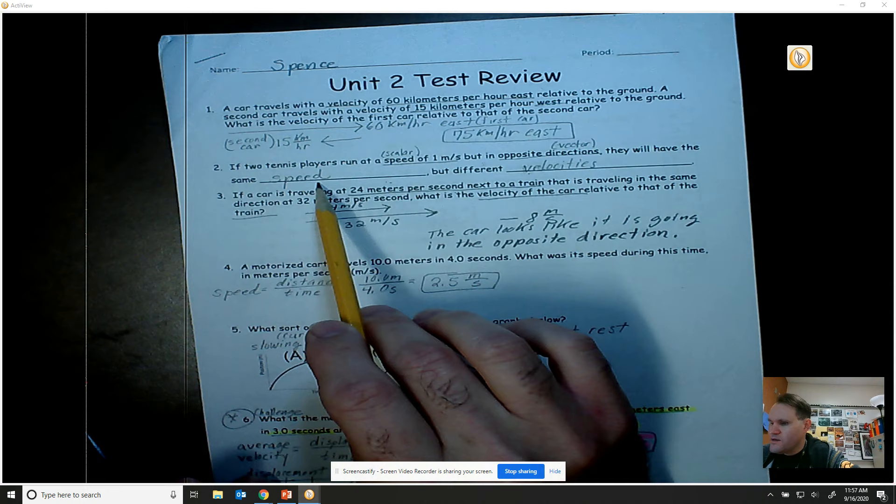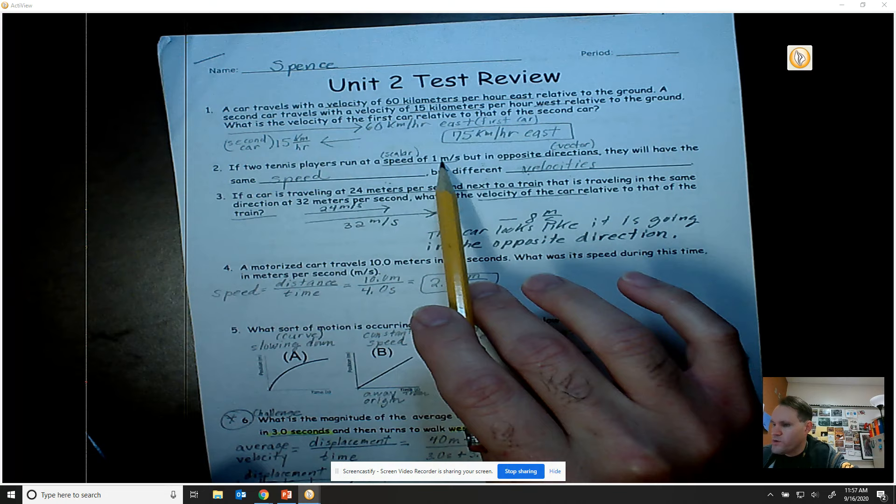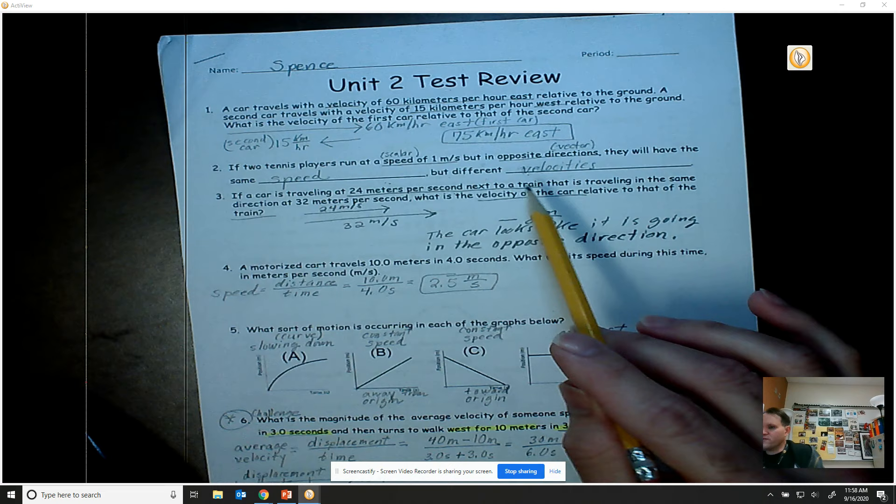They can have the same speed because they're both moving at one meter per second, but since they're moving in opposite directions that means that their velocity is going to be different. Remember velocity is a vector - vector means the magnitude along with the direction.